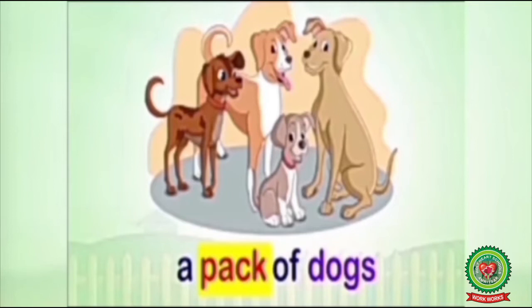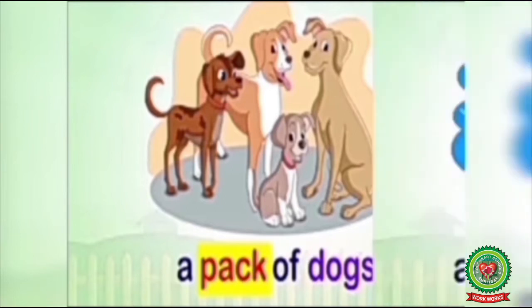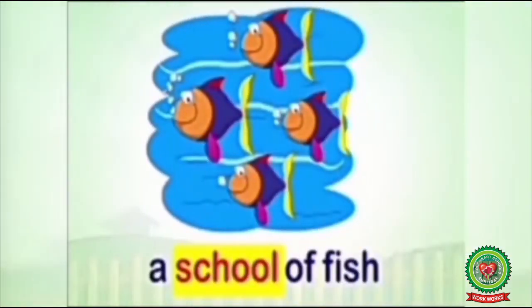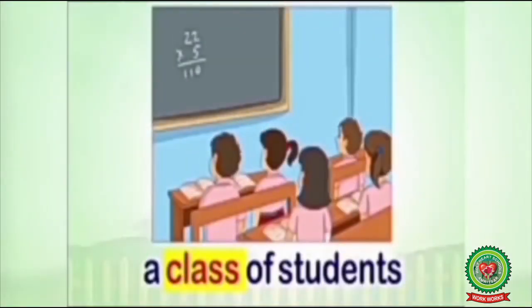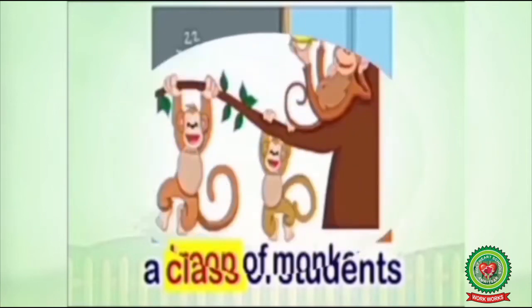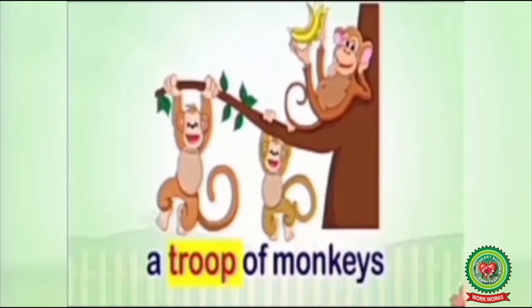Look at these examples. A pack of dogs — pack means a group of dogs, so it is a Collective Noun. A school of fish — school means a group of fish. A class of students — class means a group of students. A troop of monkeys — troop means a group of monkeys. So all of these are Collective Nouns.